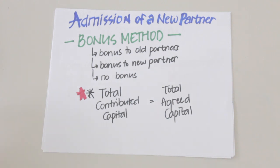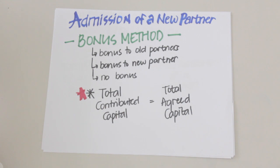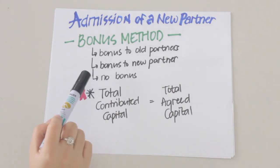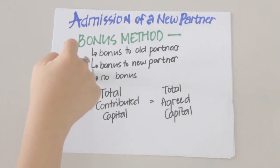We'll move on to accounting for admission of a new partner. When admitting a new partner, we use the bonus method. A bonus is an amount partners are willing to allow as additional credit to a partner's capital in excess of his capital contribution — it is basically a transfer of capital from one partner to another. Under this method, total contributed capital is assumed to be equal to the total agreed capital.